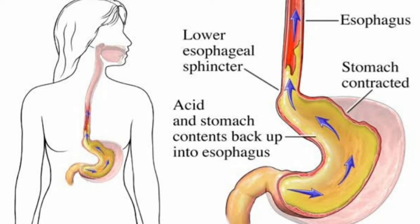The lower esophageal sphincter is a two to five centimeter band situated just proximal to the cardia of the stomach. It relaxes during esophageal peristalsis to allow food into the stomach and remains contracted at other times. It is the main barrier preventing reflux of gastric content into the esophagus. Reflux is related not to LOS tone alone but to the difference between gastric and LOS pressure, termed the barrier pressure.